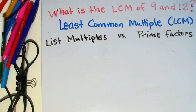The reason it's called this is because we're going to be looking at multiples of numbers, and we want to choose a number that both numbers have in common and the lowest one that they share.